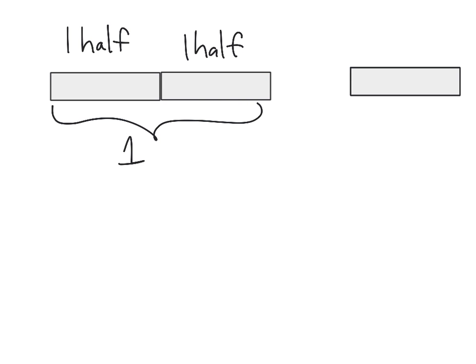So for example, let's say I take one of these, and I tell you that this is one-half. Well, if that's one-half, then what would a whole look like? Well, a whole would be two of them, because we know that one-half plus another half equals one whole.